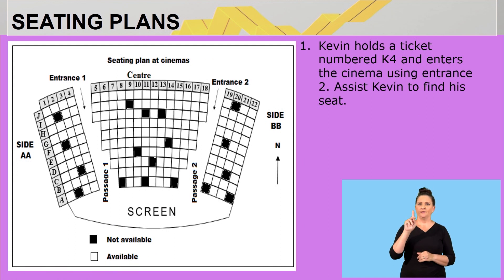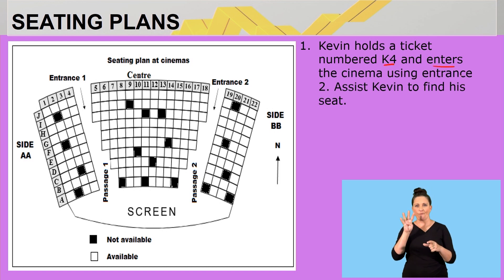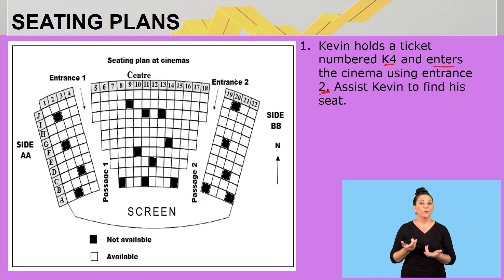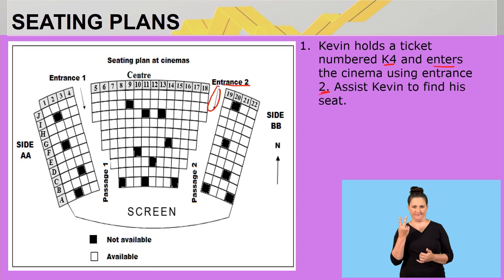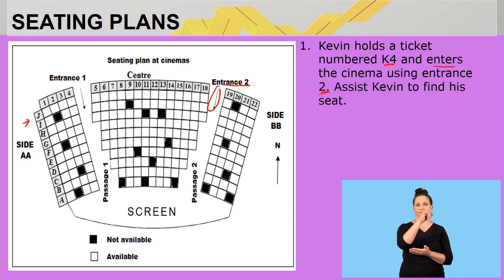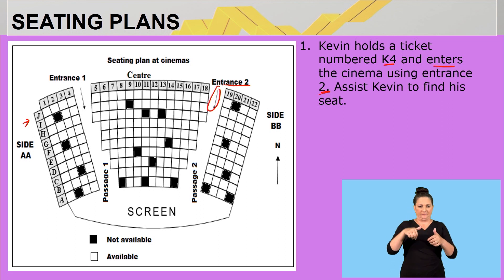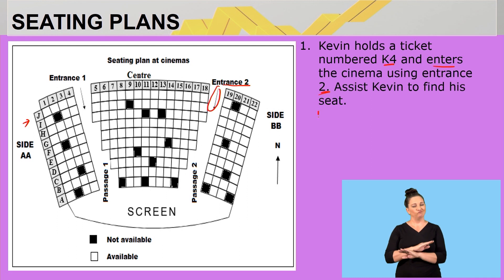Question one says: Kevin holds ticket number K4 and enters the cinema using entrance two. Assist Kevin in finding his seat. So Kevin will enter at entrance two. He is looking for seat number K4. If I look at how the seating plan is arranged, we start with A, B, C, D all the way up to J. My conclusion is that there is no seat for Kevin because there is no row K.